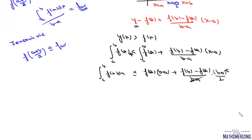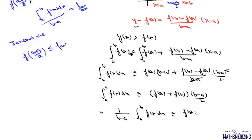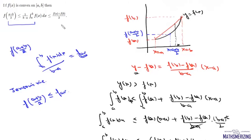So we can write ∫[a to b] f(x) dx ≤ (f(a) + f(b))·(b − a)/2. Now rearranging, (1/(b−a)) ∫[a to b] f(x) dx ≤ (f(a) + f(b))/2. And this is how we prove this result.